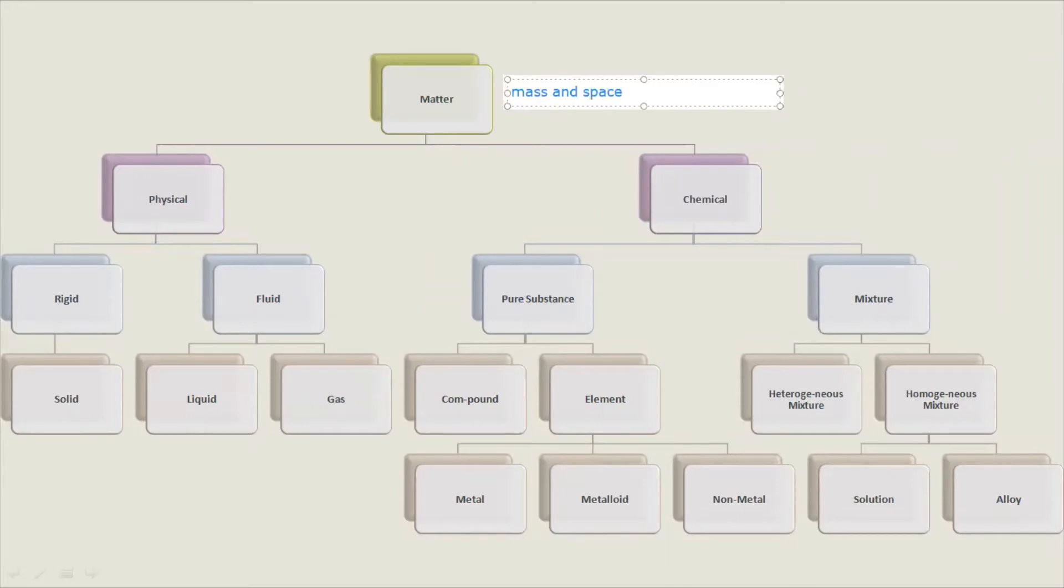We can classify matter according to two ways: either physical or chemical. Physical classification of matter is according to its space, while chemical is according to its composition.